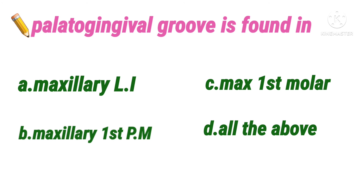Next question: the palatogingival groove is found in — option A maxillary lateral incisor, B maxillary first premolar, C maxillary first molar, D all of the above. The palatogingival groove is a characteristic feature found in the maxillary lateral incisor, so the answer is option A.